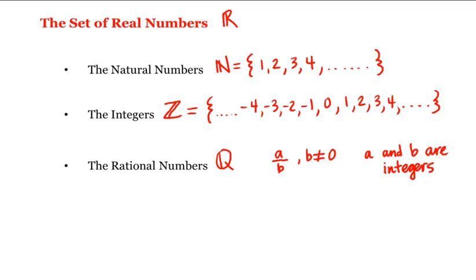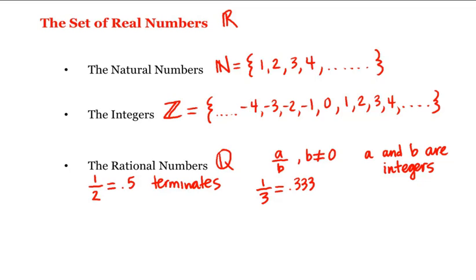The decimal representation of a rational number either terminates or repeats. For example, 1 divided by 2 is a rational number, and its decimal representation is 0.5 — it stops or terminates. Whereas 1 divided by 3, which is also a rational number, has a decimal representation that repeats — it doesn't stop, it repeats.